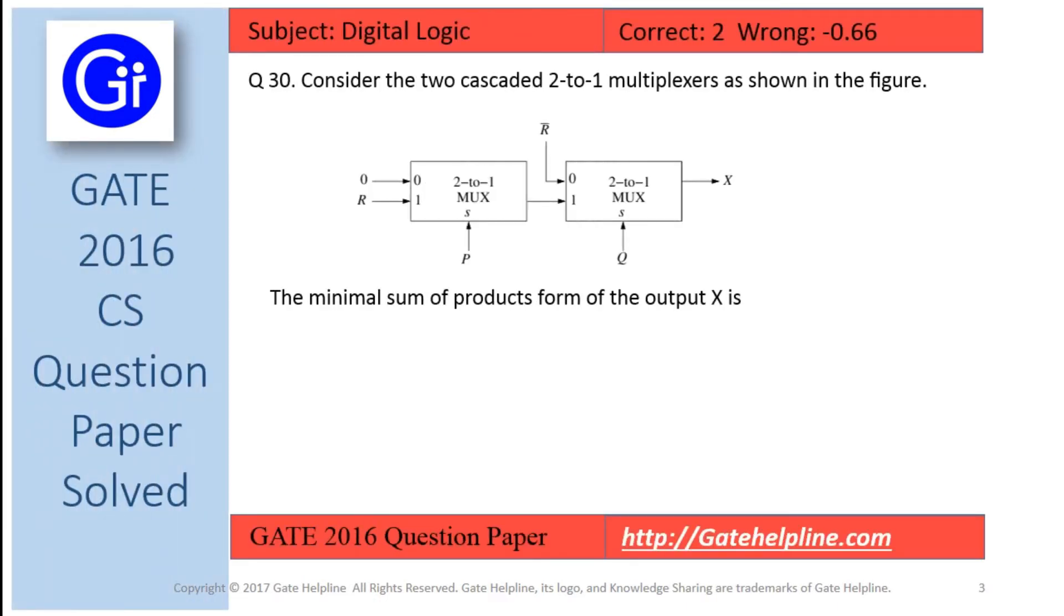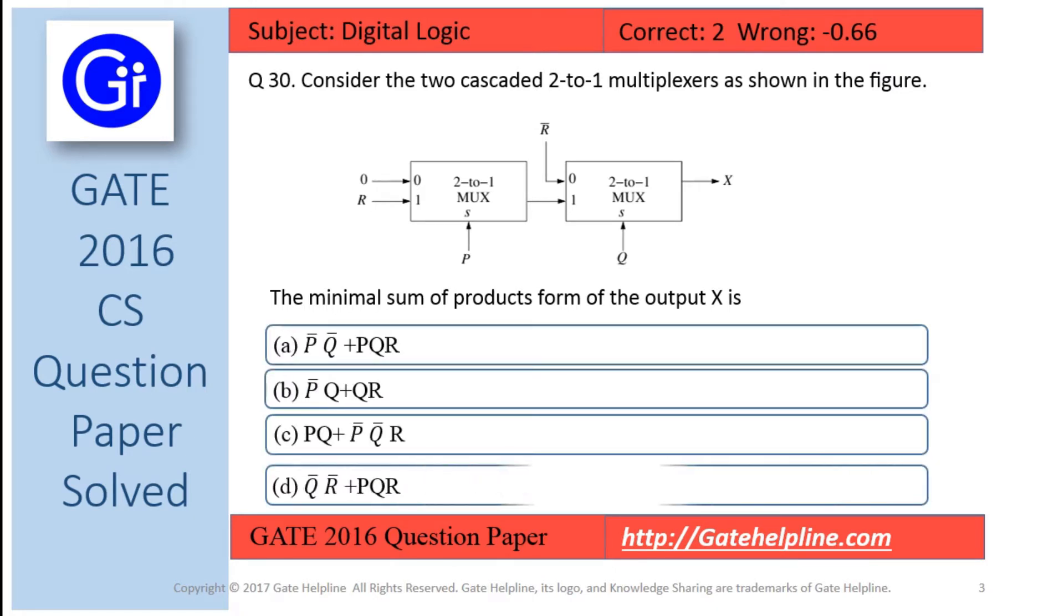Question number 30 is: consider the two cascaded 2 to 1 multiplexers as shown in the figure. The minimal sum of products form of the output X is, and the options are A, B, C and D.